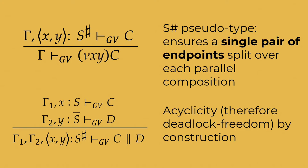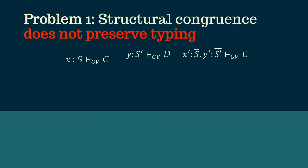So a large part of the problem lies in how GV proves deadlock freedom. In particular, how we can reason about the tree structure that the fork construct gives us. So GV relies on an extrinsic type system for processes which encodes the invariant that precisely one pair of endpoints is split over each parallel composition. The idea is that name restrictions introduce this S-sharp pseudo-type, inspired by the linear pi-calculus, which is then eliminated by parallel composition. As a result, we get acyclicity and therefore deadlock freedom by construction. Although this is sufficient to show deadlock freedom, it's also very inflexible.